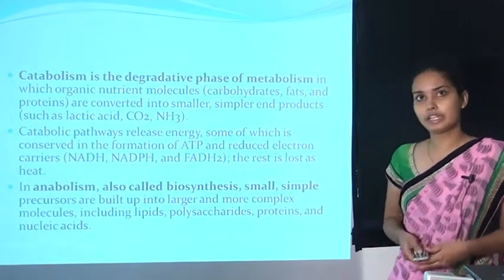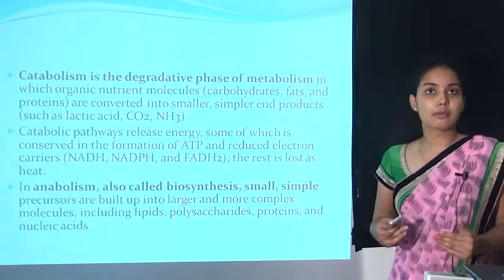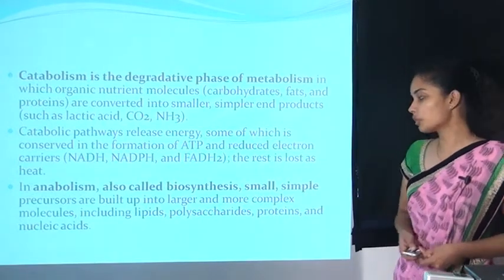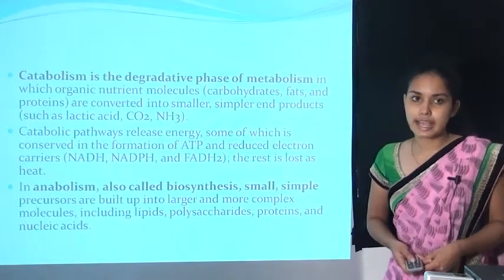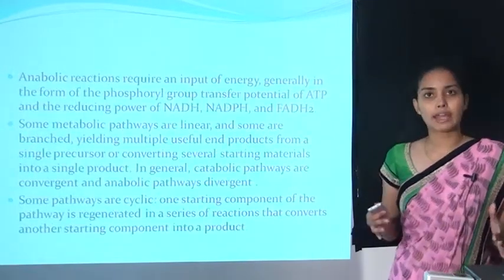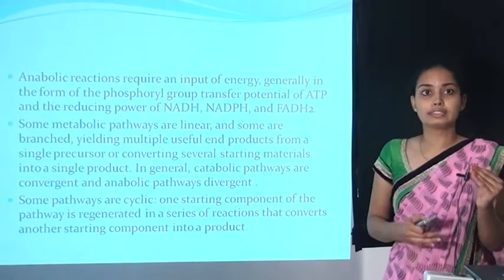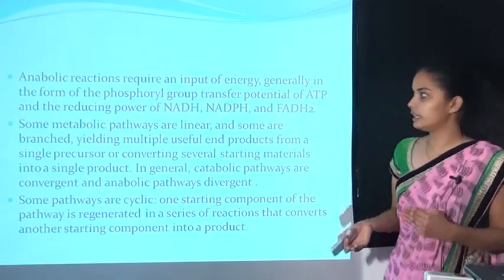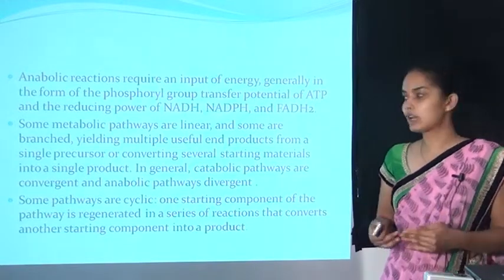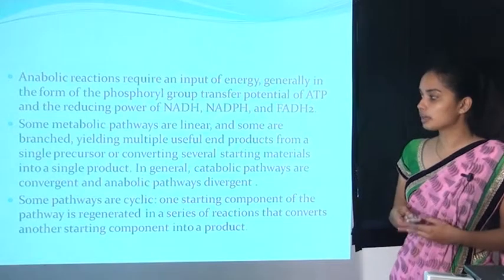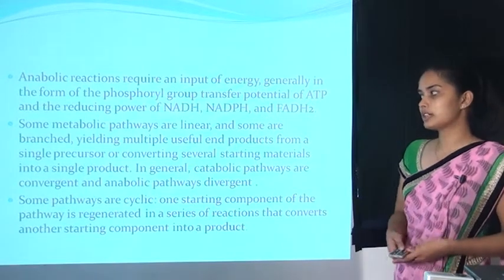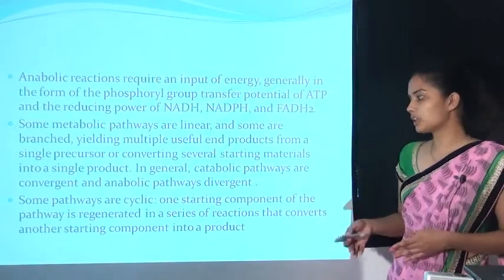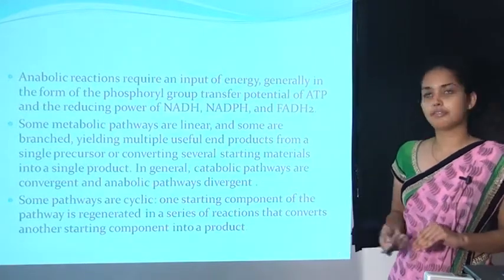In anabolism, also called biosynthesis, small simple precursors are built up into large and more complex molecules including lipids, polysaccharides, proteins, and nucleic acids. Anabolic reactions require an input of energy, generally in the form of phosphoryl group transfer (ATP) and reducing power like NADH, NADPH, and FADH2. Some metabolic pathways are linear and some are branched, yielding multiple useful end products from a single precursor. In general, catabolic pathways are convergent while anabolic pathways are divergent.